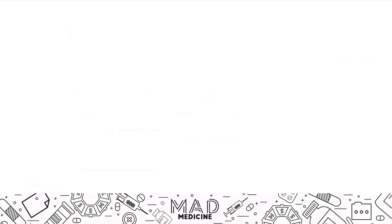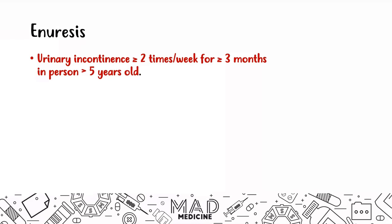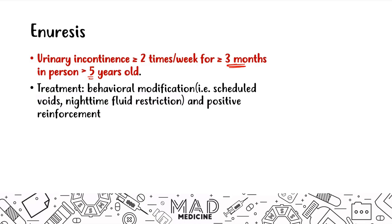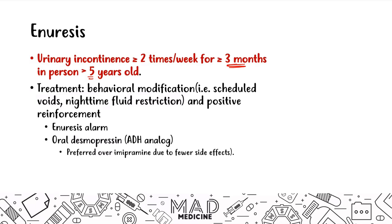Finally, enuresis. Enuresis is when a patient, usually a child, has urinary incontinence that occurs more than two times a week for three months, and it usually occurs in a person greater than five years old. Treatment is very simple: behavioral modifications like scheduled voids, nighttime fluid restrictions, positive reinforcement, and enuresis alarms to train someone to wake up when they wet the bed. You can also give oral desmopressin, which is an antidiuretic ADH hormone analog, and this is preferred over imipramine due to fewer side effects.